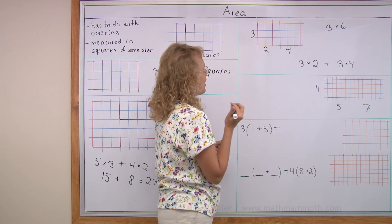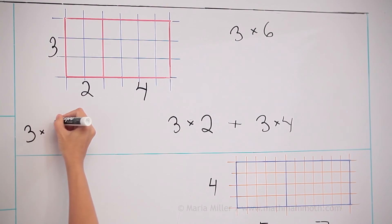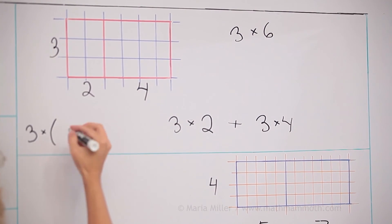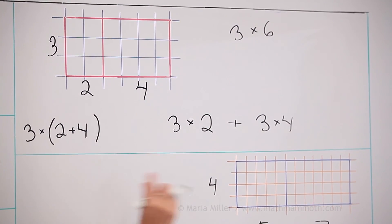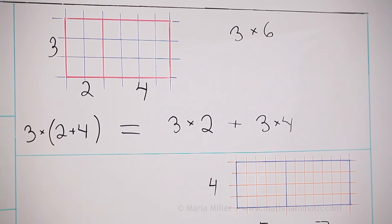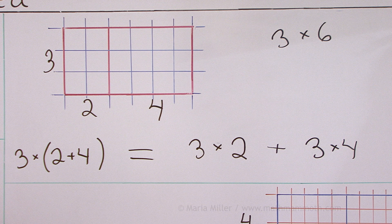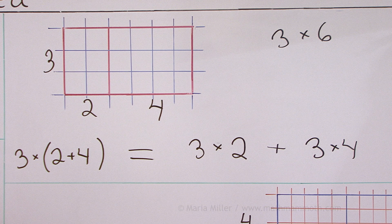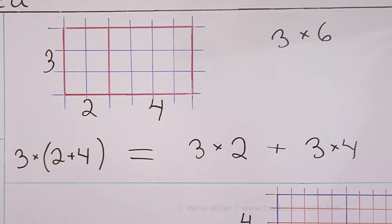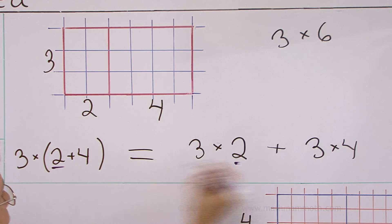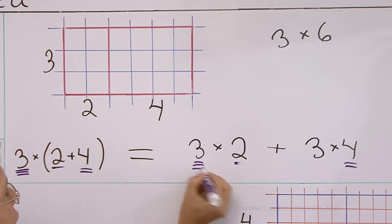But now I want to show you something that you might not have seen before. And that is, I can also write the area of the big rectangle in this manner. I will write it as 3 times, and then this side written as 2 plus 4. I know it's 6, but I'm going to write it here as 2 plus 4 in parentheses. And this equals what I wrote over there. So notice, 3 times in parentheses 2 plus 4 is the area of the whole rectangle. And I can also calculate it in two parts. The area of the first rectangle plus the area of the second rectangle. Right? Notice here the 2 is here and here. And then we have the 4 here and the 4 here. And then the 3 is both here and here.